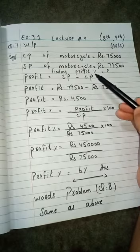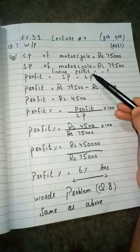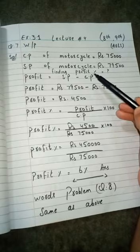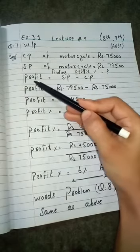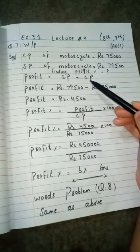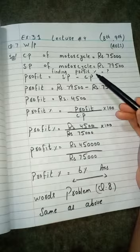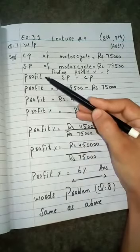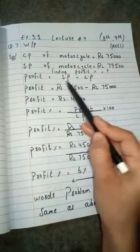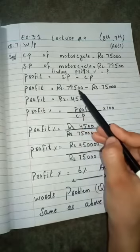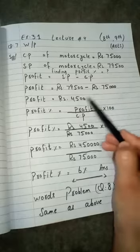But before starting to find out the profit in percentage we are going to find out profit. If we use the formula profit is equal to selling price minus cost price. This is the first formula for profit, selling minus cost price. 79,500 minus 75,000, greater value minus lower value.